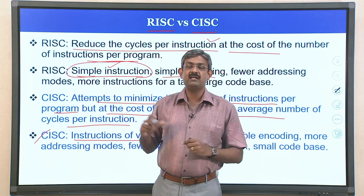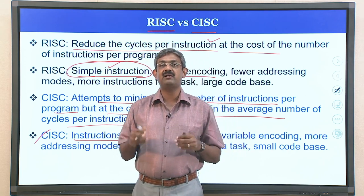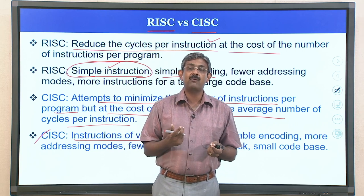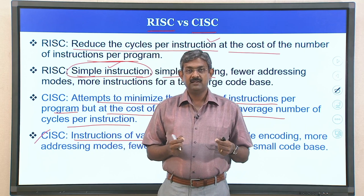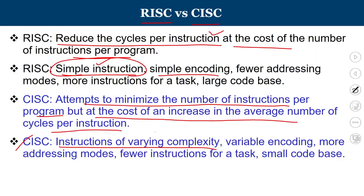In CISC, there is no such uniformity; some instructions may take 1 byte, some 3 bytes, some 8 bytes, or even 15 bytes. So the update of the program counter also depends on the length of the current instruction, meaning instruction length can vary. Based on the complexity, you can have 2 memory operands or one register plus one memory operand, all taking variable amounts of space — called variable encoding. More addressing modes are generally supported, and for a given task it will have a smaller code base, though the architecture is slightly more complex.